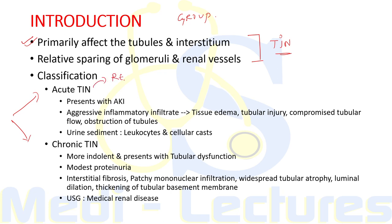For convenience, these disorders are classified into acute and chronic. Acute disorders are often reversible; chronic are often irreversible with permanent damage to renal parenchyma. Acute TIN most often presents with AKI, caused by aggressive inflammatory infiltrate leading to tissue edema, tubular injury, compromised tubular flow, and even obstruction of tubules with cast, cellular debris, or crystals.